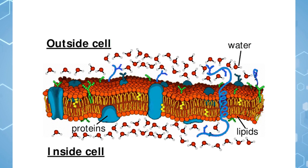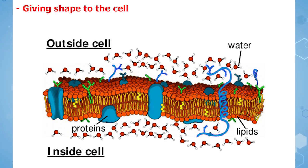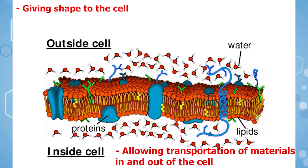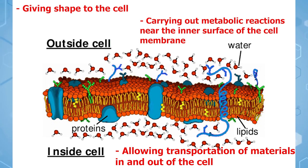Some of the other functions of the cell membrane include giving shape to the cell, allowing transportation of materials in and out of the cell, and carrying out metabolic reactions near the inner surface of the cell membrane.